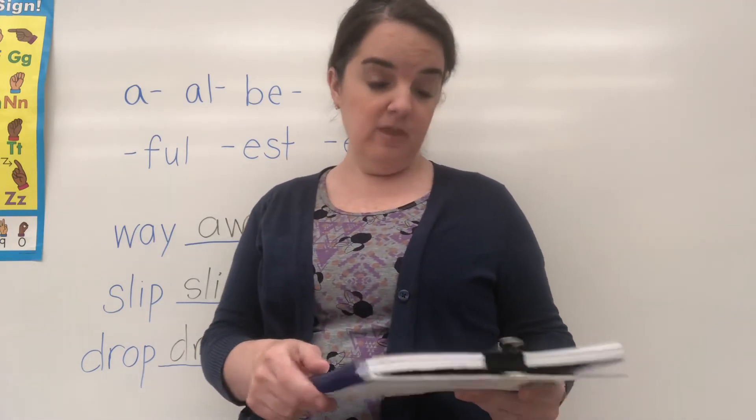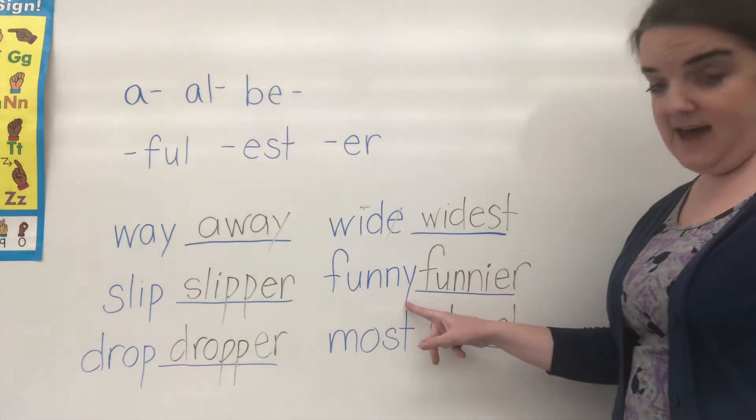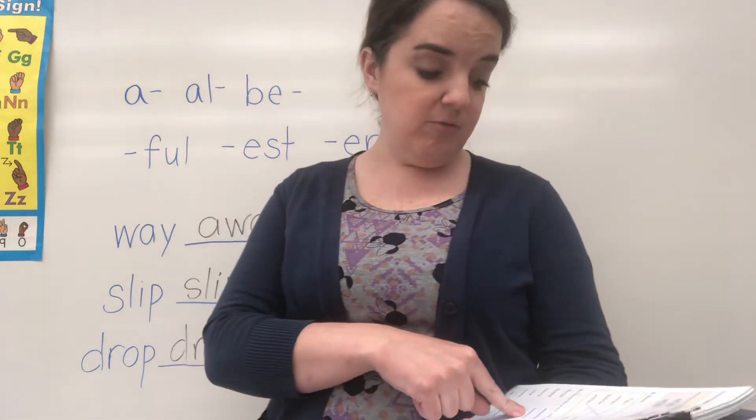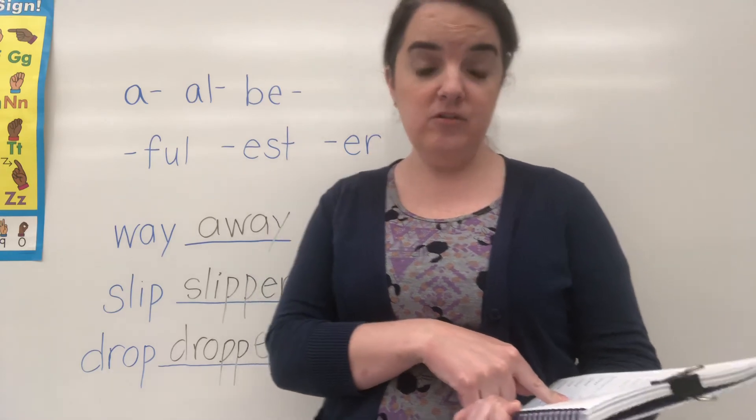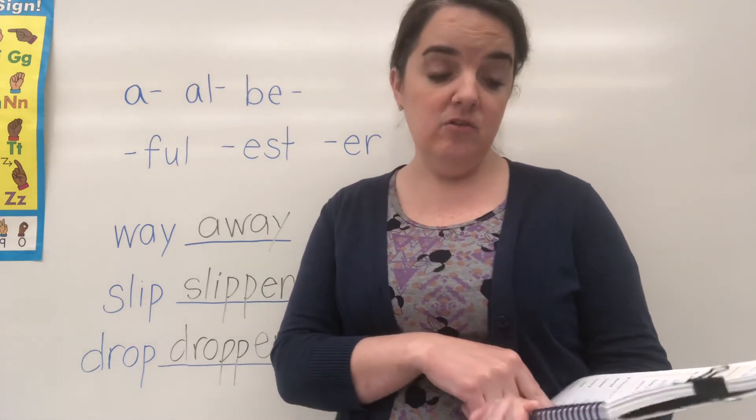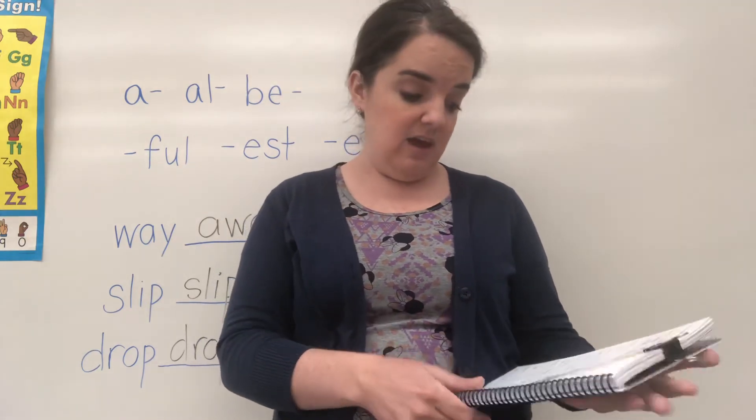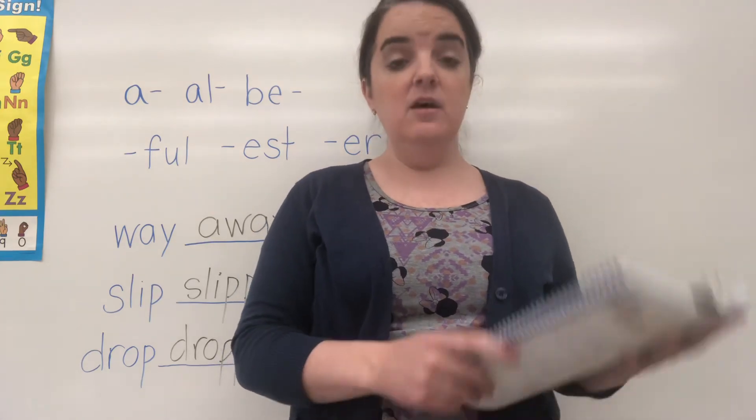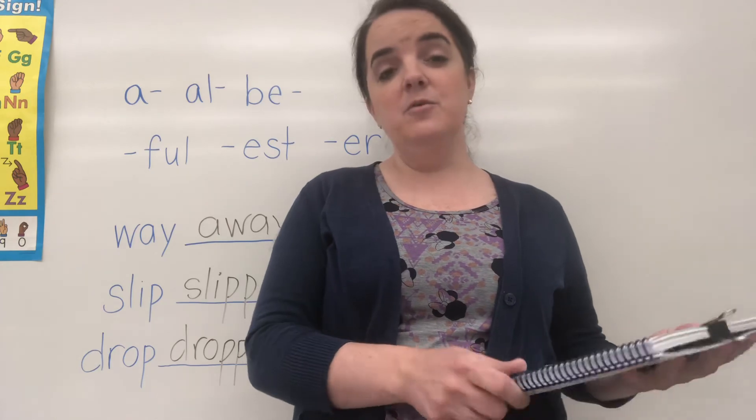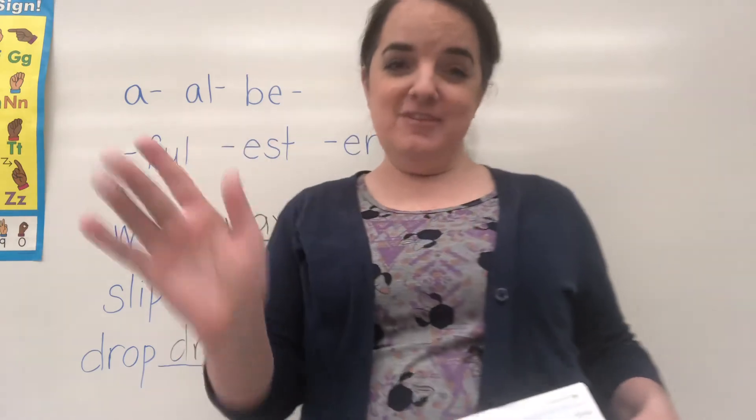And then section three, just like we had the word that ends with Y, we drop the Y and then add the suffix. That's what you need to do on section three. You're changing the Y on the words to an I and adding E-S-T to those words. Change the Y to an I and add E-S-T. And that will complete your lesson, lesson 150 for Tuesday, April 28th. Hope you have a great day. See you later. Miss you so much.